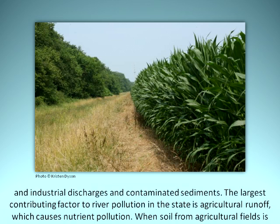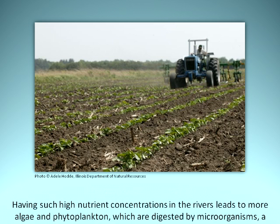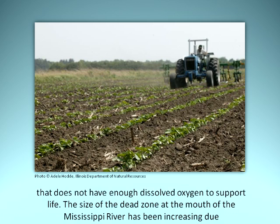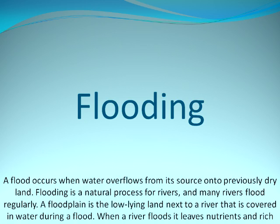The largest contributing factor to river pollution in the state is agricultural runoff, which causes nutrient pollution. When soil from agricultural fields is carried by streams or floods into the rivers, the water is also carrying the fertilizers and pesticides farmers use on their crops. These fertilizers in the river are the biggest contributing factors to nutrient pollution. High nutrient concentrations lead to more algae and phytoplankton, which are digested by microorganisms — a process that removes oxygen from the water. One major effect of this is the dead zone in the Gulf of Mexico, an area that does not have enough dissolved oxygen to support life, and its size has been increasing due to increases of pollution in the rivers.